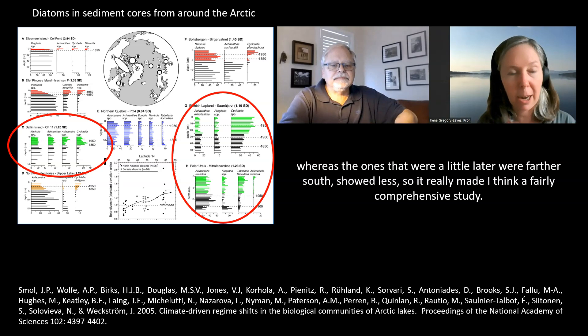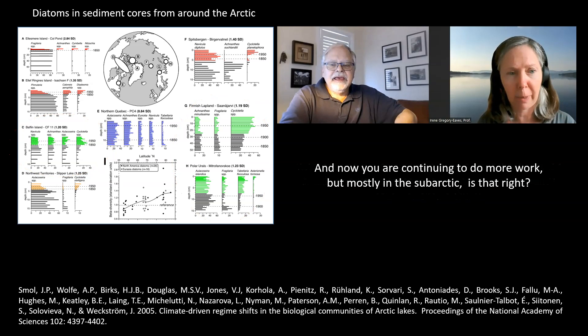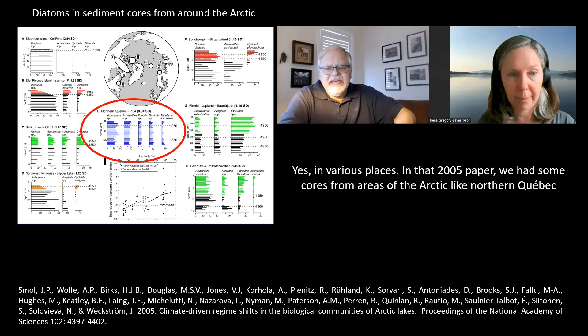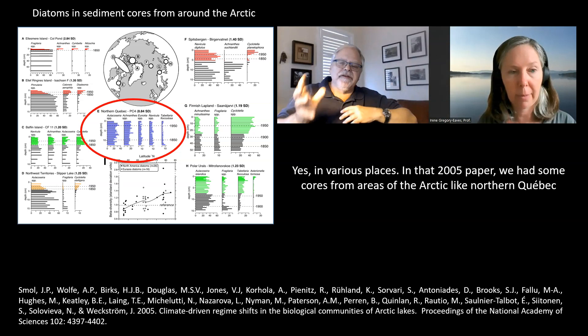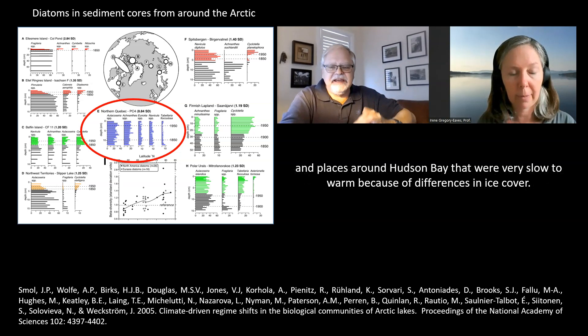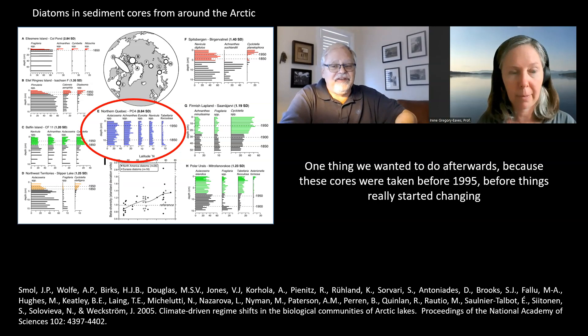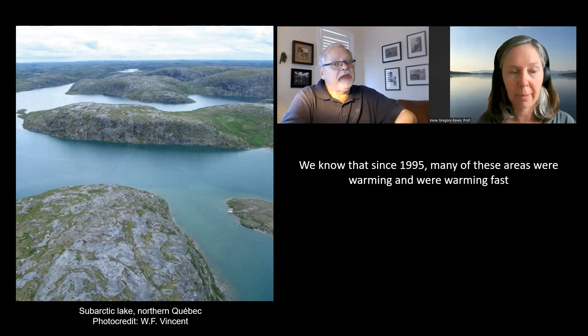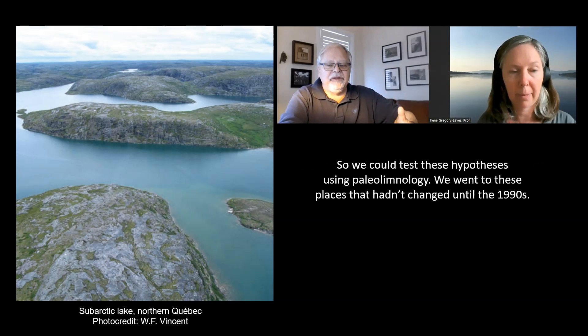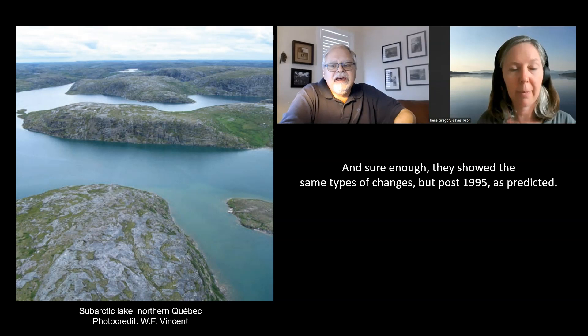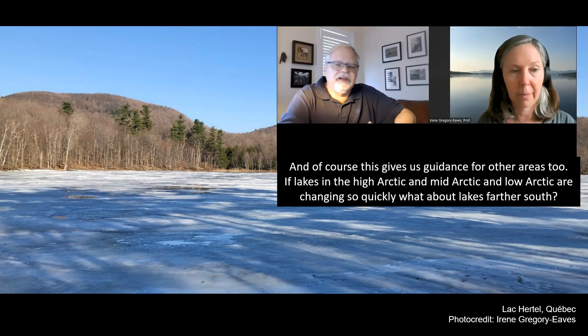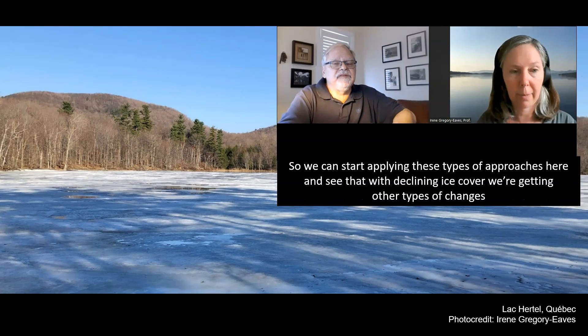We're continuing to do more work, mostly in the subarctic and the Arctic, in various places. In that 2005 paper, we had some cores from areas like northern Quebec and around Hudson Bay that were very slow to warm because of differences in ice cover. Many of those cores were taken before 1995, before things really started changing. Since 1995, many of those areas were warming and warming fast. We could test these hypotheses using paleolimnology — going to places that hadn't changed until the 1990s, and sure enough they showed the same types of changes, but post-1995 as predicted. This gives us guidance for other areas: if lakes in the high, mid, and low Arctic are changing so quickly, what about farther south? With declining ice cover, we're getting other types of changes. Lakes are changing and changing very fast due to climate change, and paleolimnology has played a key role in showing that.